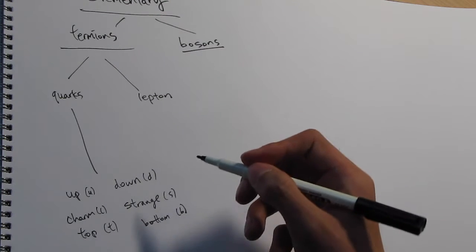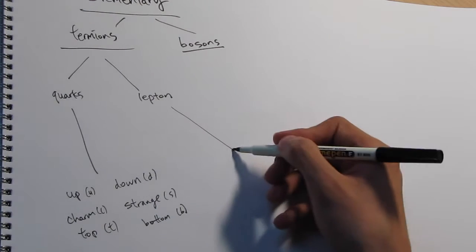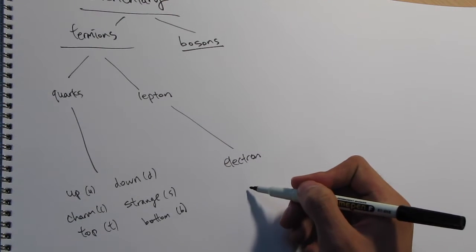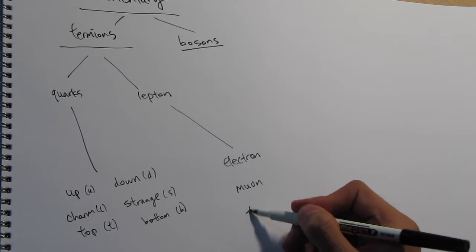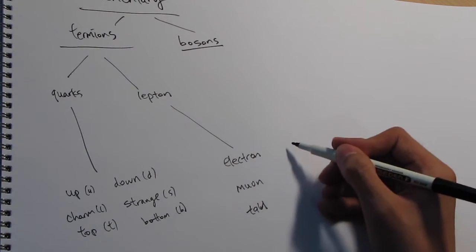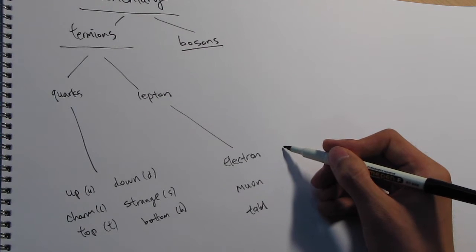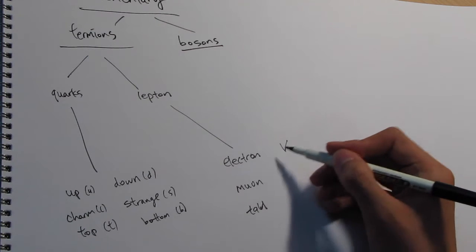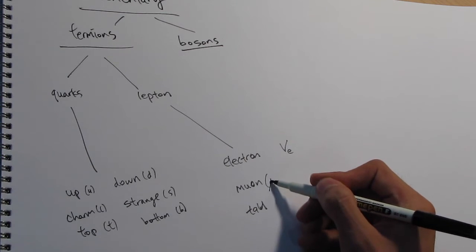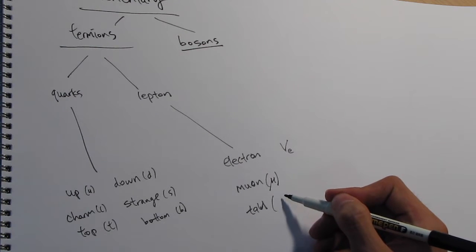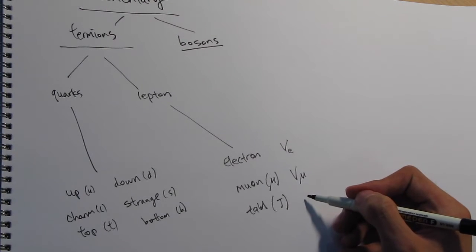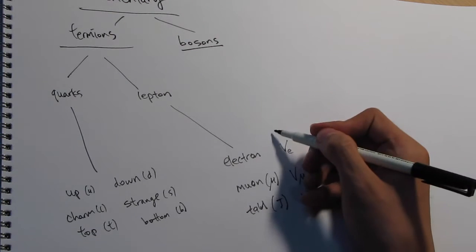The basic leptons are the electrons, which we have all heard of, along with muon and tau. These have neutrino particles as well. The neutrino is shown with a V, so an electron neutrino is Ve. Muon neutrino is abbreviated with the Greek letter mu, and tau uses the Greek letter tau, so those are V-mu and V-tau.